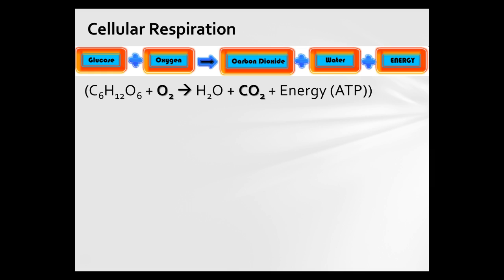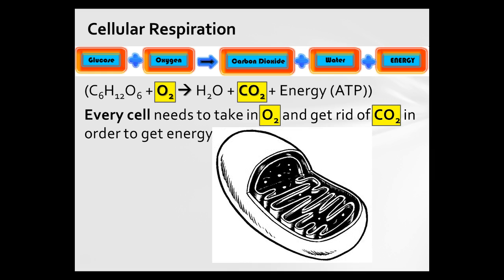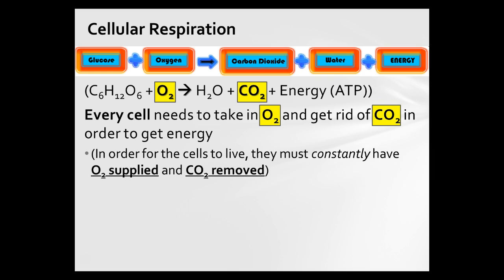We've previously talked about how important ATP is. Here, we're going to focus on the importance of getting oxygen in to perform respiration, and getting carbon dioxide out — our waste product. Every cell has to take in oxygen and get rid of carbon dioxide in order to produce energy. Without enough oxygen, you won't make ATP and you'll die. Can't get rid of CO2, you're poisoning your body. The organelle driving all this is, of course, the mitochondrion — it really needs oxygen in and carbon dioxide out. It supplies power to the rest of the cell, and if you shut down the power plant, you shut down the cell. Shut down enough cells, you shut down a person. So cells must constantly have oxygen supplied and carbon dioxide removed.